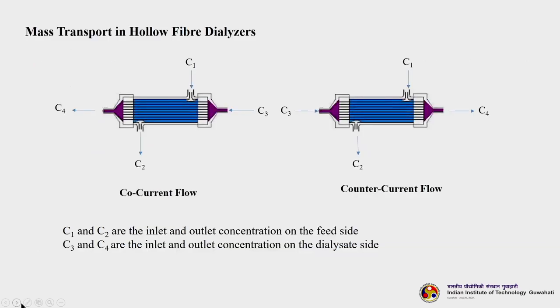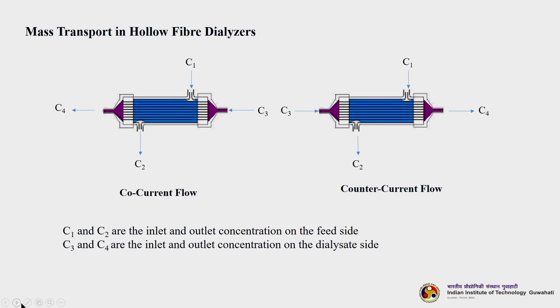For mass transfer in hollow fibre dialysers, two flow arrangements are possible: co-current flow, where feed and dialysate flow in the same direction, and counter-current flow, where they flow in opposite directions. C1 and C2 are inlet and outlet concentrations on the feed side, while C3 and C4 are inlet and outlet concentrations on the dialysate side.